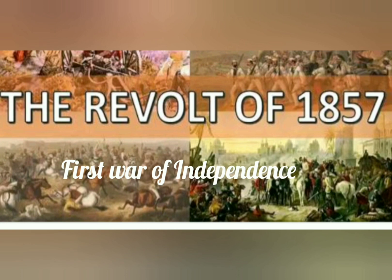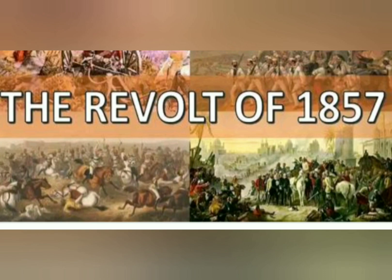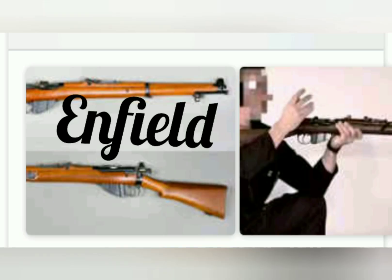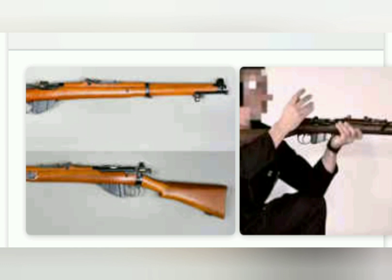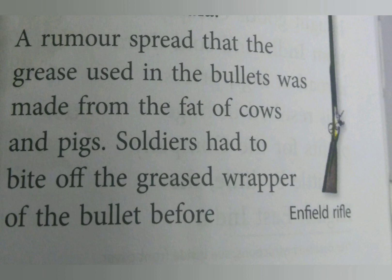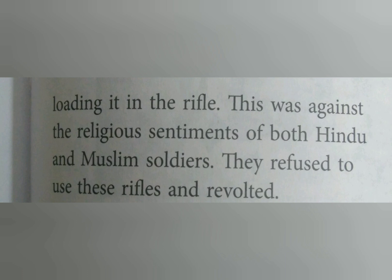It was an important event in our struggle for freedom. The revolt was started by Indian soldiers serving in the British Army. The British had introduced a new rifle called the Enfield Rifle, and a rumor spread that the grease used in the bullets was made from the fat of cows and pigs. Soldiers had to bite off the greased, wrapped bullets before loading them into the rifles. This was against the religious sentiments of both Hindus and Muslims, and both refused to use those rifles and revolted.